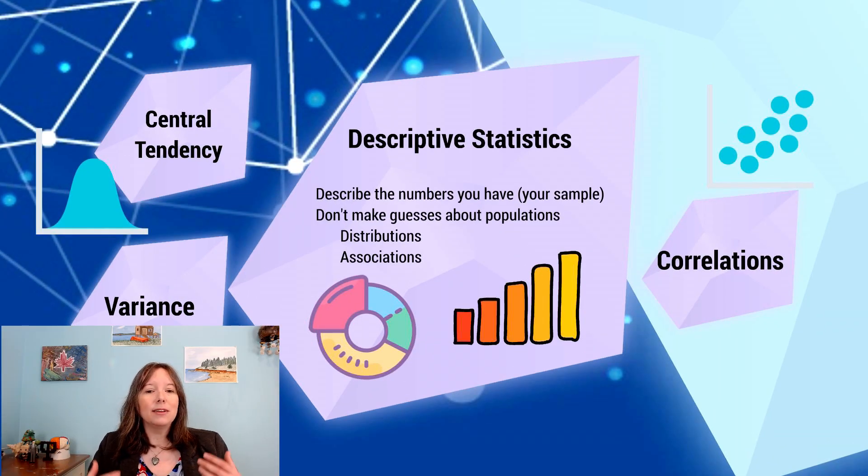So with descriptive statistics, again, this is to describe the numbers you have in your sample, and you don't make guesses about a population. And two of the main things we use in descriptive statistics are distributions and associations.